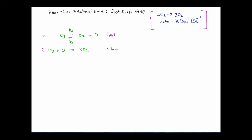Now, O3 is second order, and O2 is raised to the minus 1. So the rate of this reaction is going to be equal to the rate constant times the square of the concentration of ozone divided by the concentration of oxygen. So as oxygen builds up, the rate of this reaction is actually going to slow down.